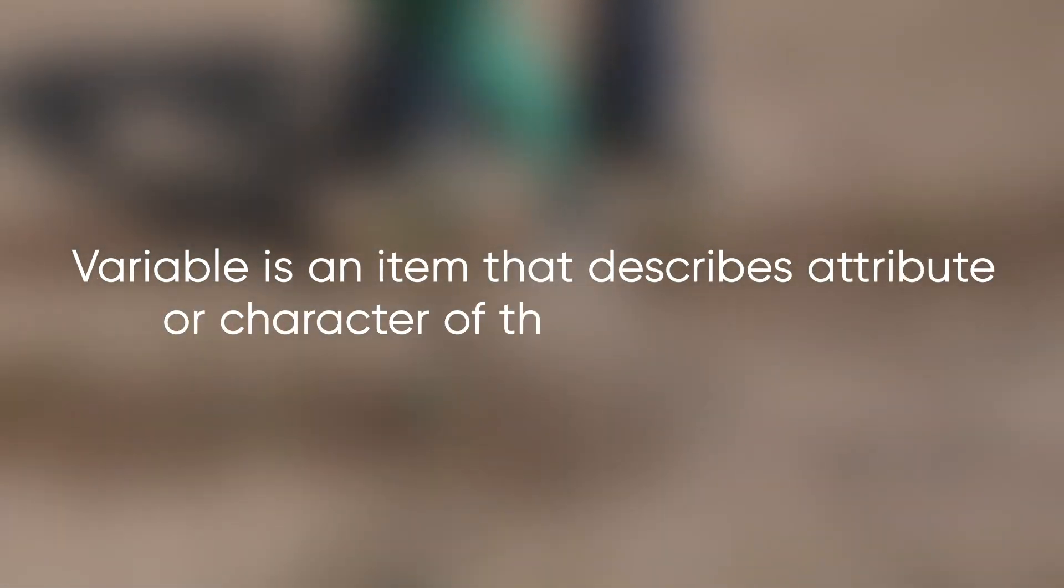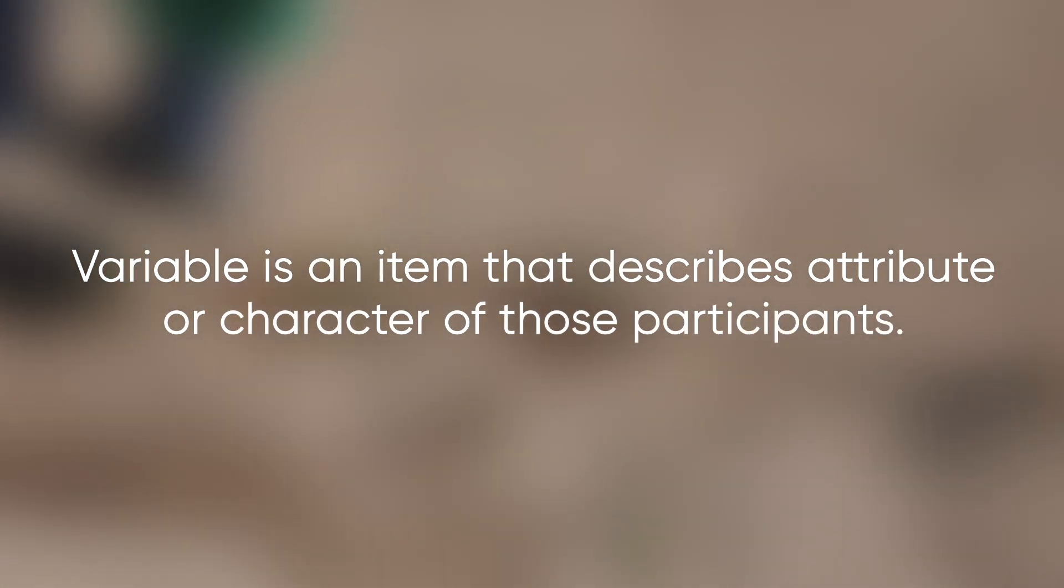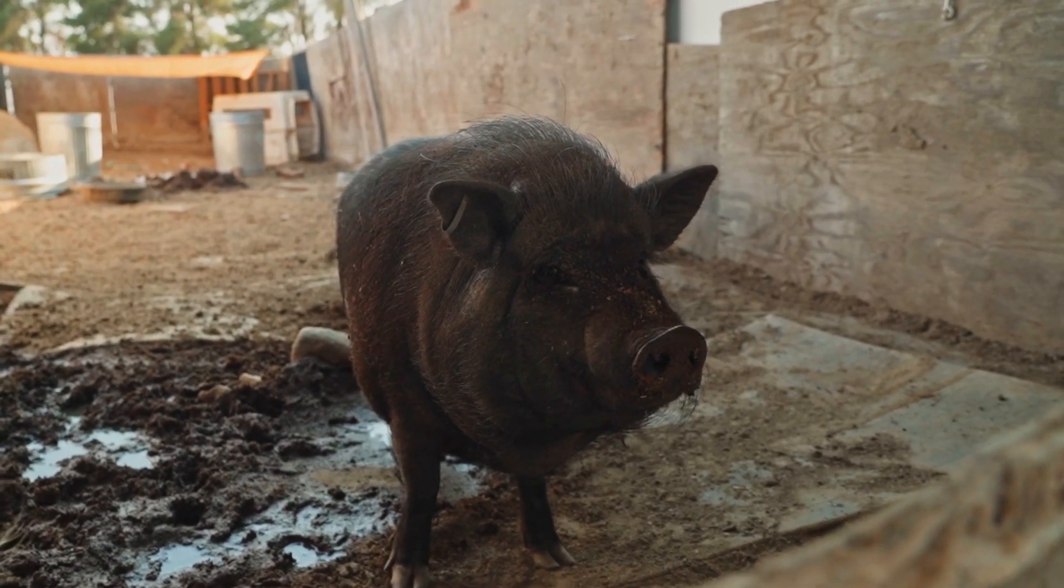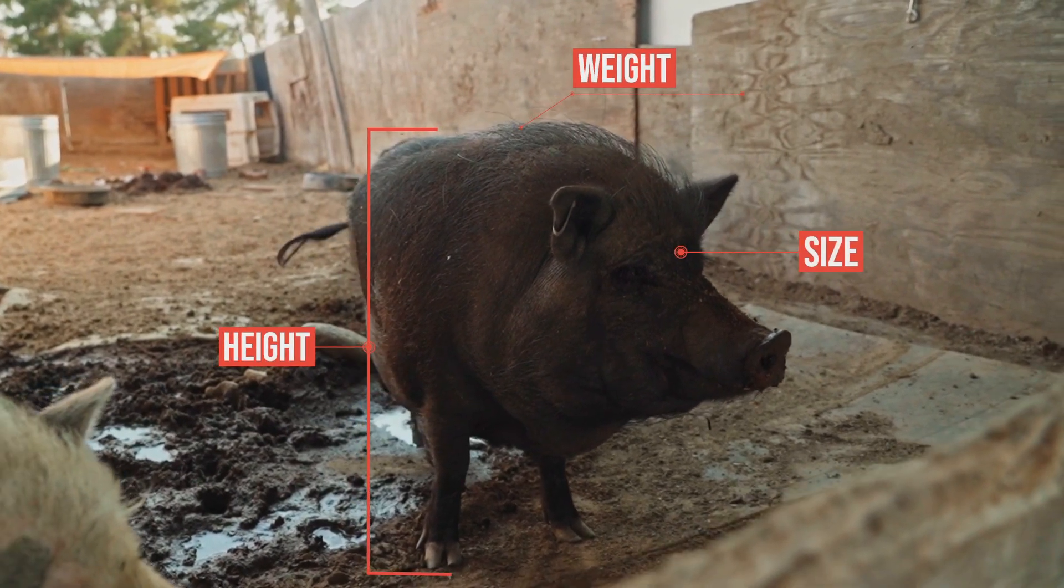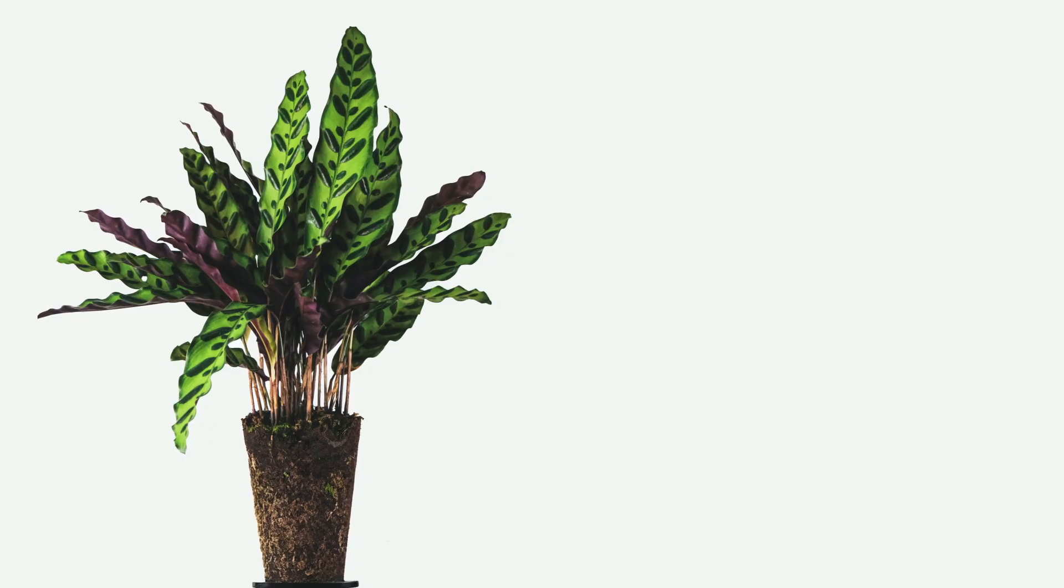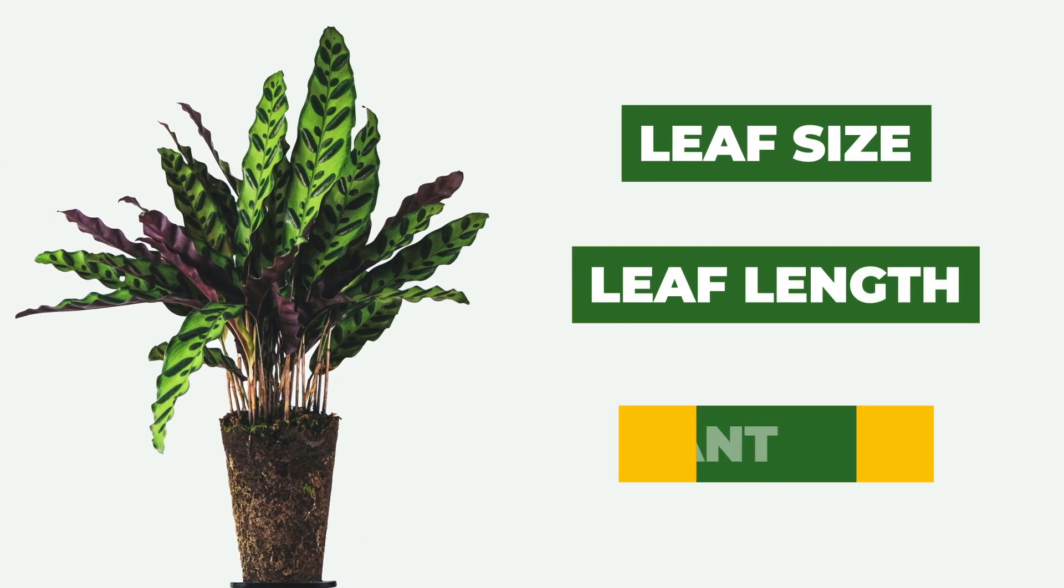Variable is an item that describes an attribute or character of those participants. For example, for this animal, variable could be weight, height, size, etc. For this plant, variable could be leaf size, leaf length, plant length, etc.